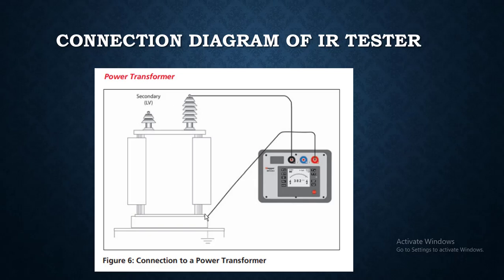If you wish to test with the LV bushing, you can change this lead from ground to LV and check the insulation between HV to LV. Another option is the current connection showing insulation testing between HV to ground.